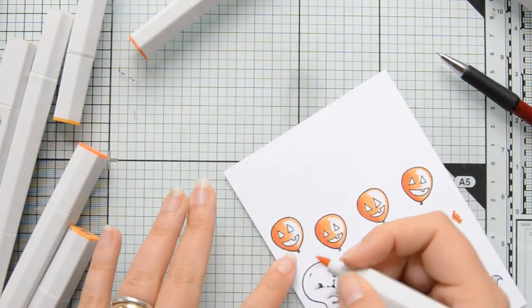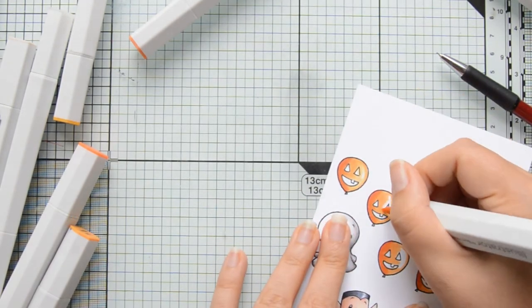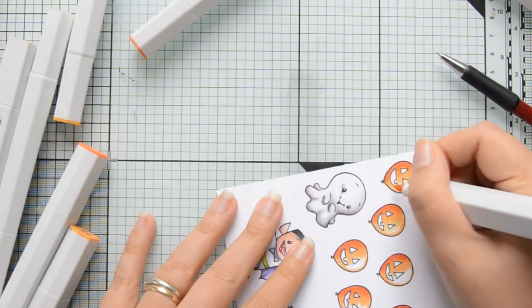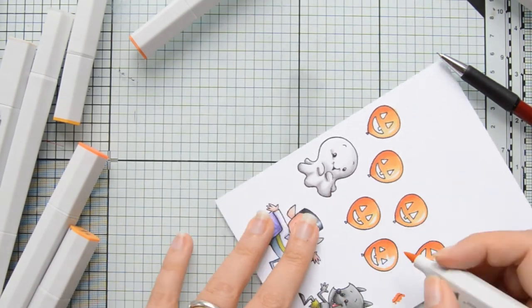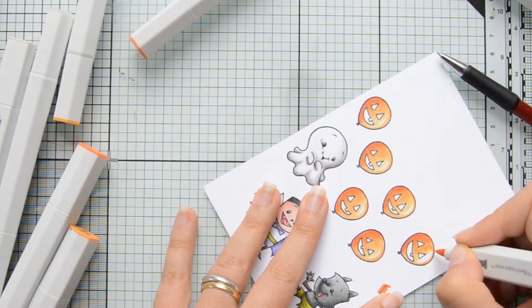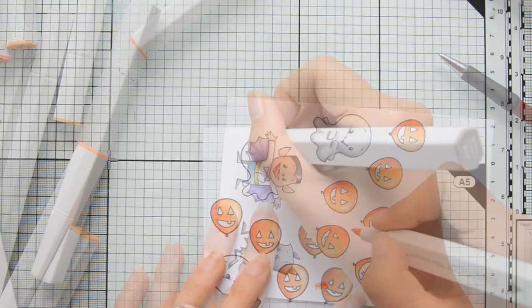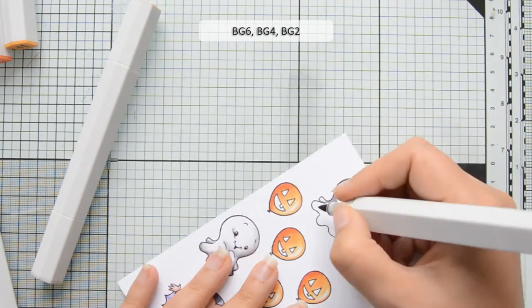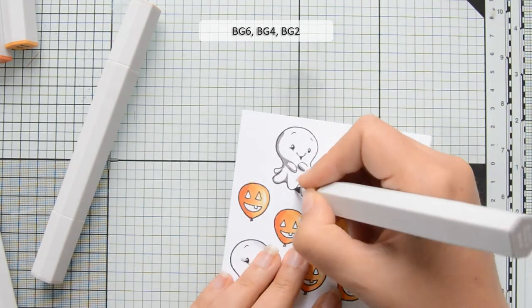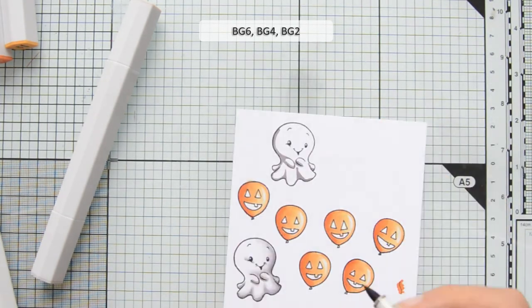The reason why you want to erase your pencil lines before going in with your alcohol markers is that if you don't, then you will not be able to erase the pencil lines because somehow the ink will trap the graphite, I guess, but you will actually not be able to remove them. So make sure to go ahead and do that beforehand.